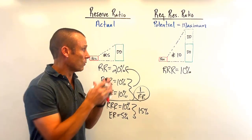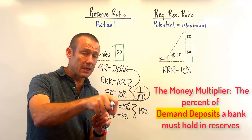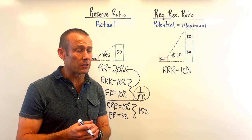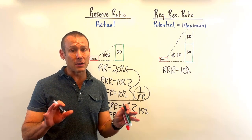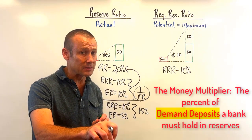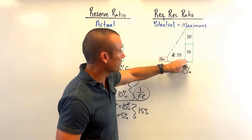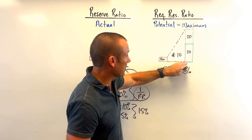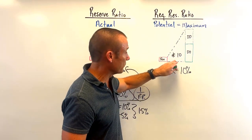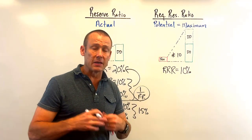The required reserve ratio is defined as the percent of demand deposits a bank must, or is required to, hold in reserves. A common student mistake is saying it's the percent of reserves they must hold in reserves — that doesn't even make sense. The required reserve ratio is the percent of demand deposits, which are a liability to banks, that they must hold in reserves, which are an asset. So in this case, banks may only be choosing to have five times more demand deposits than reserves, but the maximum is a tenfold increase — for every one dollar in reserves it can support ten dollars in demand deposits.